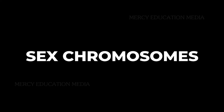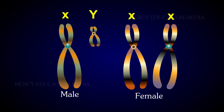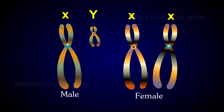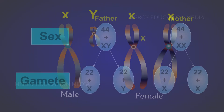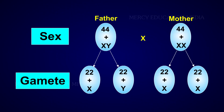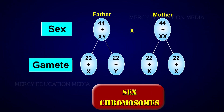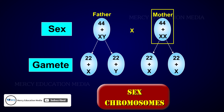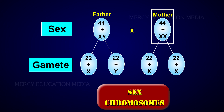In the diploid cells of animals and certain plants, one or more special chromosomes are different from the autosomes in their morphological structures and behavior. These chromosomes are involved in the determination of sex and are called sex chromosomes. In human beings, the male has XY and the female has XX chromosomes.